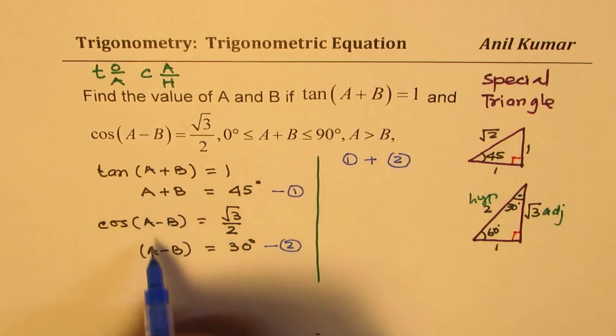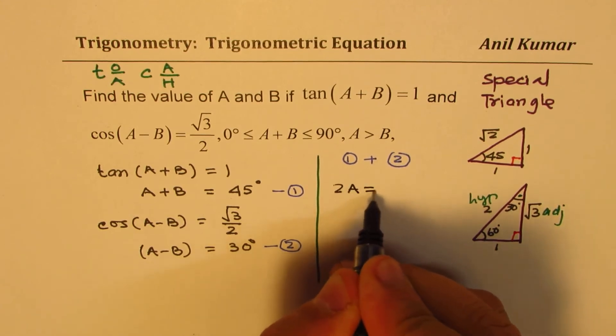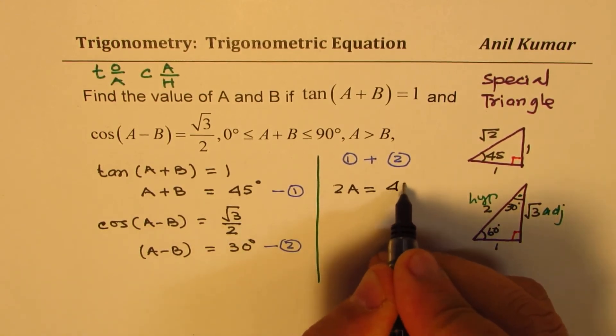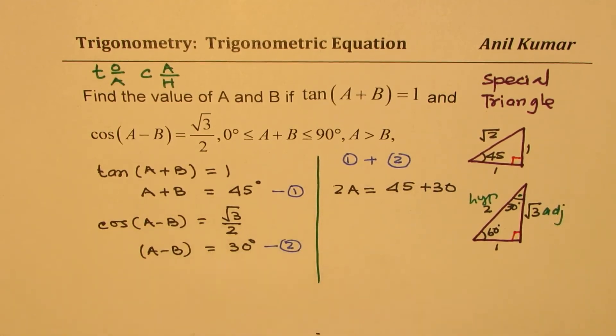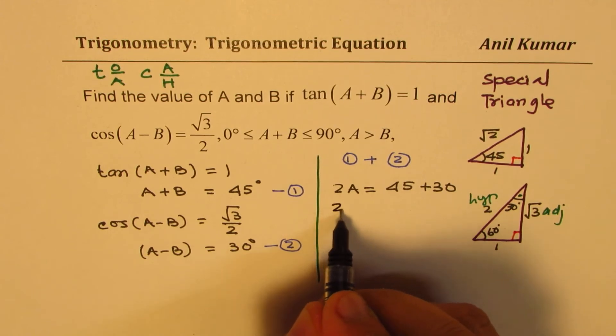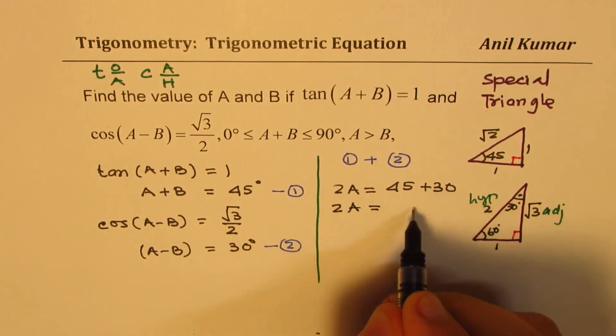So if I add equation 1 and 2, then 2A is equal to 45 plus 30. B minus B will cancel. So 2A equals 75.